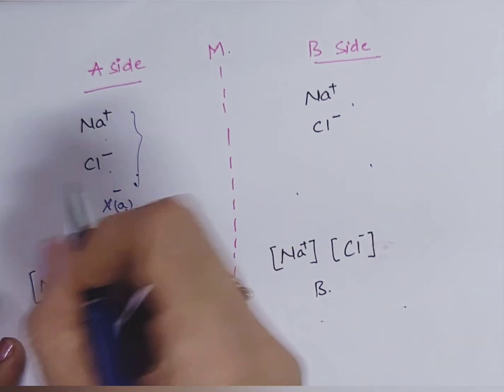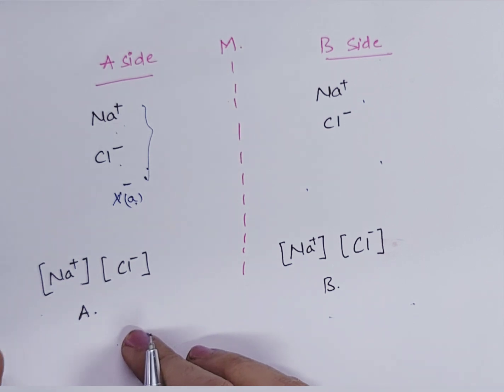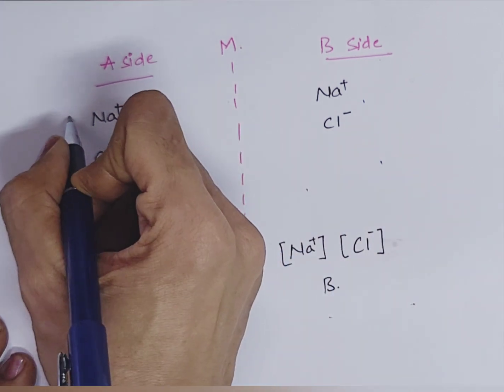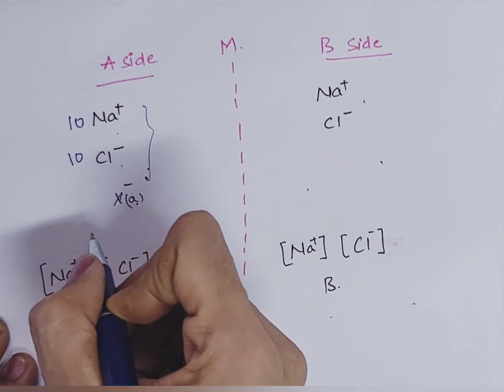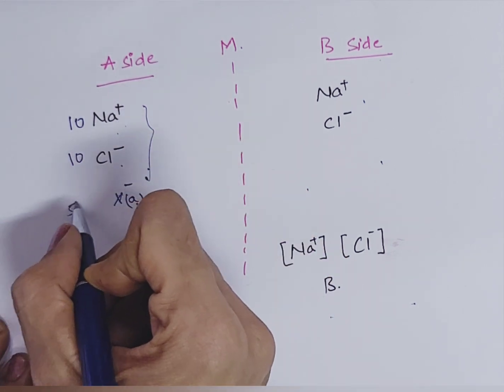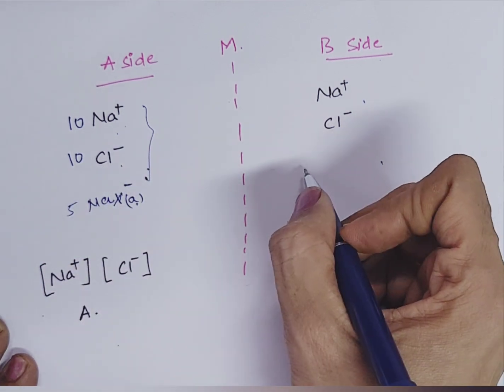Here you can see, X cannot pass. For example, suppose if we have sodium and chloride in compartment A, we have 10 sodium chloride. Means 10 sodium, 10 chloride. And we have 5 NaX. And on B side, suppose there is 0.